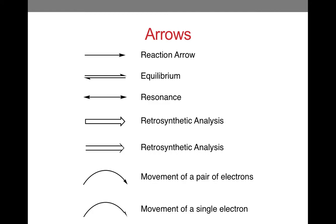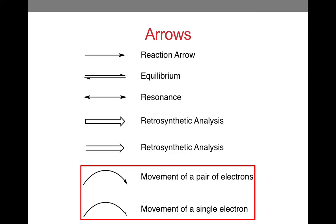There are rules for drawing an adequate mechanism, just like there are rules for naming organic compounds. It is important that the appropriate arrows are used in order to convey the information to another person. Notice that we have arrows for reactions, equilibrium, resonance, retrosynthetic analysis, and movement of electrons. Let's look at the arrows that involve the movement of electrons. Be sure to differentiate between the arrow that moves a pair of electrons and the arrow that moves a single electron.